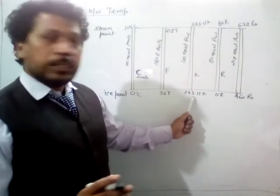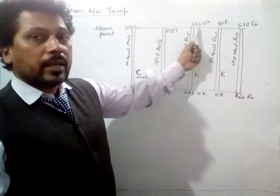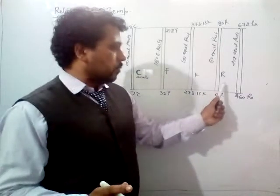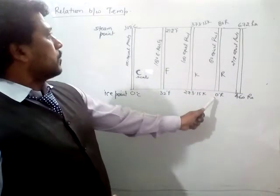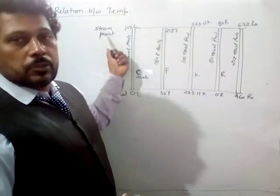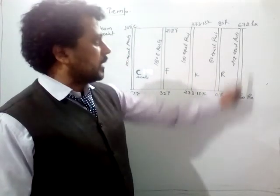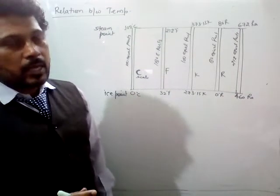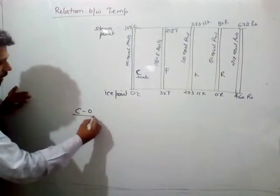For the Kelvin scale, the ice point is 273.15 Kelvin and steam point is 373.15 Kelvin, with 100 equal parts. For the Reaumur scale, the ice point is 0 degree and steam point is 80 degree. For the Rankine scale, the ice point value is 460 and steam point value is 672 Rankine.